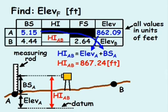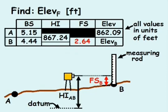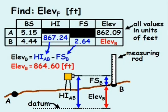Next, the rod man sets the rod vertically at point B, and the instrument man takes another level shot at the rod. This reading on the rod represents the foresight elevation, which in this case is for point B, and for this example equals 2.64 feet. The elevation at point B equals the vertical distance from the datum to point B, which equals the height of the instrument minus the foresight reading. After plugging in the known values, the elevation at point B equals 864.60 feet.